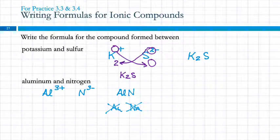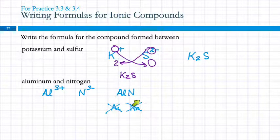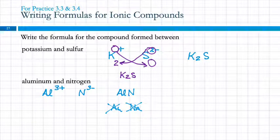The compound K2S is called potassium sulfide, and AlN is aluminum nitride. We'll get to naming in just a minute.